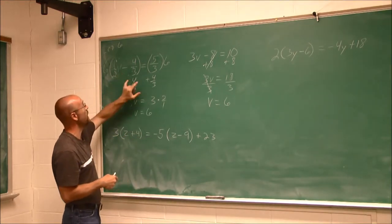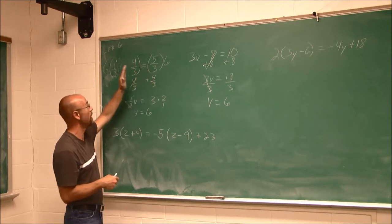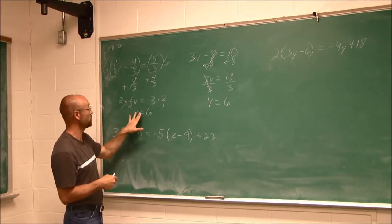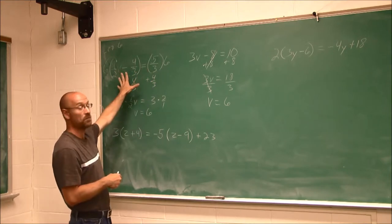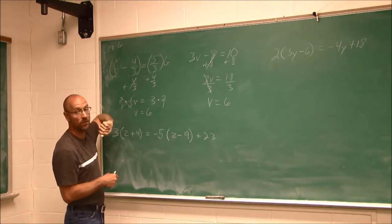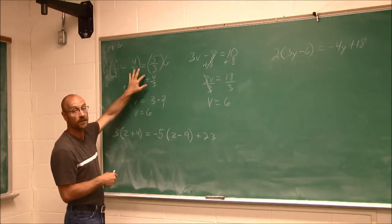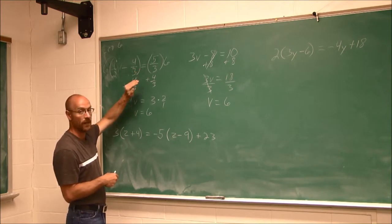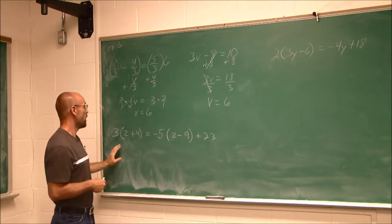So either way you work with it, you're going to get that answer. If you're comfortable with fractions and you notice these have a common denominator, you can go ahead and do it this way. If you're not comfortable with fractions with an equation, you can multiply through by LCD. This only works for equations, not expressions.